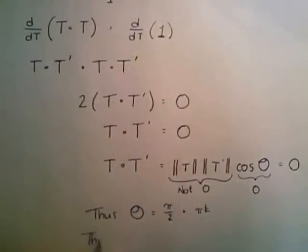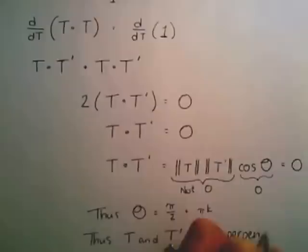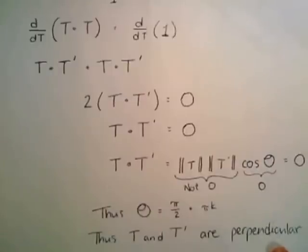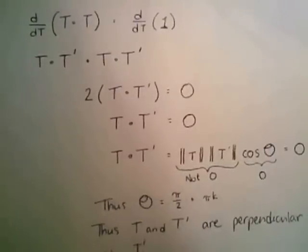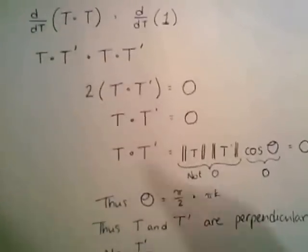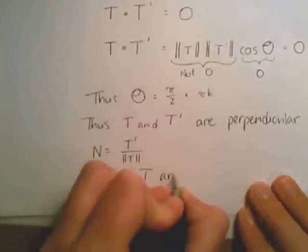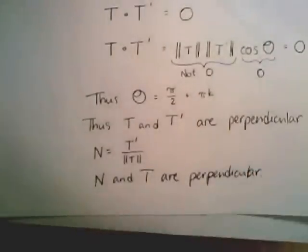Meaning, thus, T and T prime are perpendicular. So that's just a little acute mathematical proof for why T and T prime are perpendicular. And we know that because N is equal to T prime divided by the magnitude of T prime, divided by the magnitude is just going to shorten that vector. And that tells us that N and T are perpendicular.